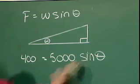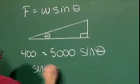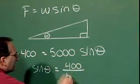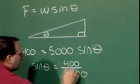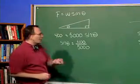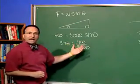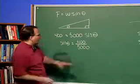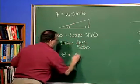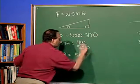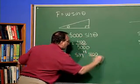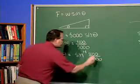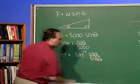So, sine theta is going to equal 400 divided by 5,000. Then, what we do is use the calculator by plugging in the inverse of the sine for 400 over 5,000. We can reduce this down, and it reduces down all the way to 2 over 25.